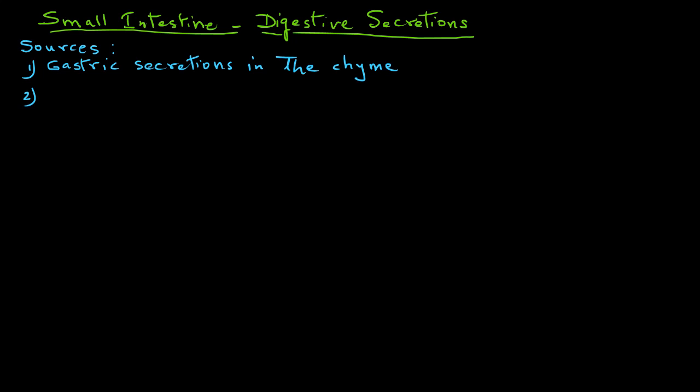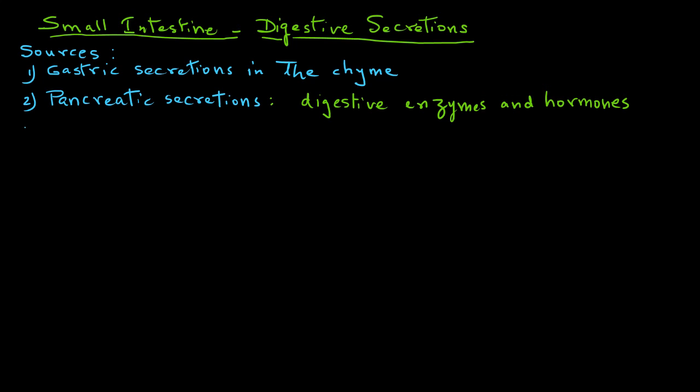The second source are the pancreatic secretions. As we saw in the video of the pancreas, the pancreas is an important gland that produces many enzymes. Those secretions are conveyed through the pancreatic duct and enter the duodenum through the papilla of Vater.